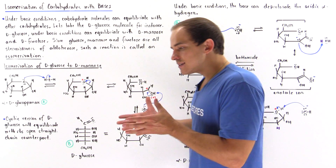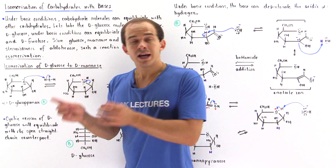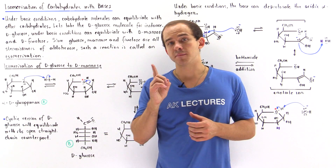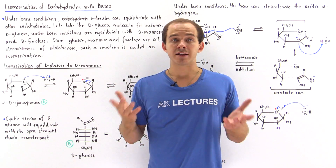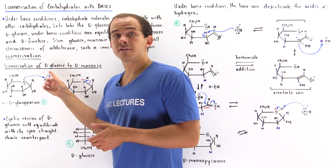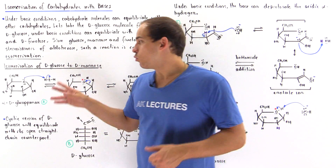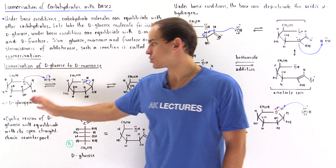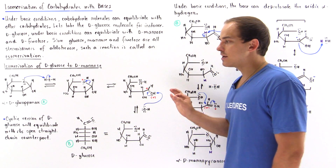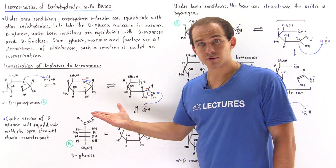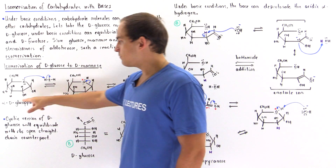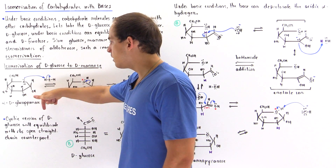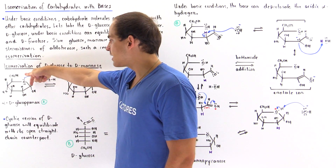Any cyclic carbohydrate exists in equilibrium with its open-chain counterpart, and it's the cyclic version that predominates. That means we have to begin with the cyclic version of D-glucose. There are two cyclic versions: the alpha-anomer and the beta-anomer. In this lecture, we'll focus on the alpha-anomer, but we can replace it with the beta-anomer and nothing will change — the only difference is that in the alpha case the hydroxide points downward, while in the beta case it points upward.